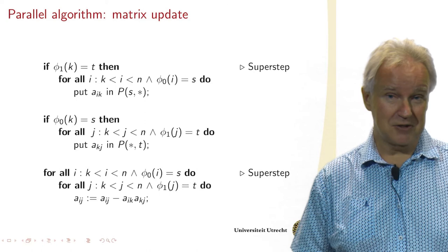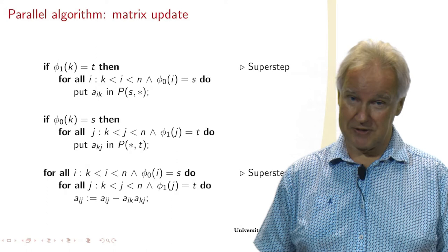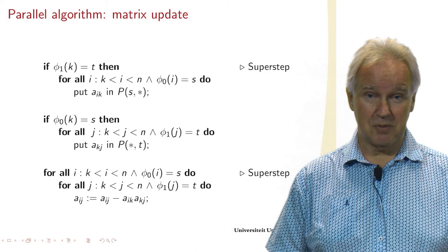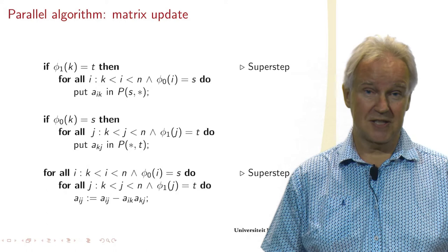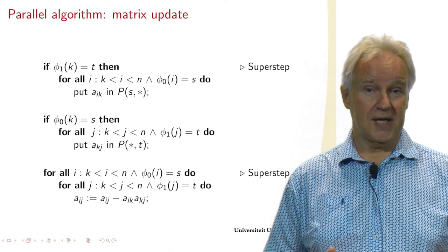We can do something similar for the remainder of the algorithm, and then we look at the second superstep. You recognize the matrix updates, and we perform them for all I and J, but of course only if they are mine. And that's why we have a statement, a condition: phi_0(I) should be S, and phi_1(J) should be T.